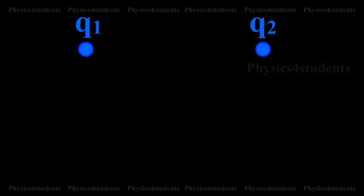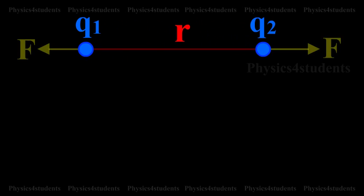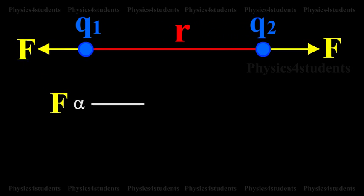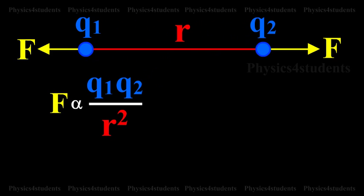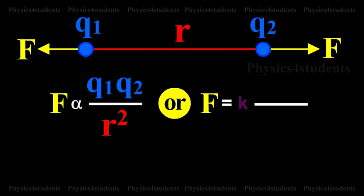Let Q1 and Q2 be two point charges placed in air or vacuum at a distance r apart. Then, according to Coulomb's Law, F is directly proportional to Q1 into Q2 divided by r squared, or F is equal to K into Q1 into Q2 divided by r squared.